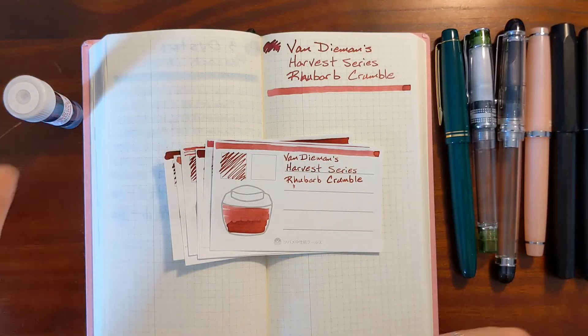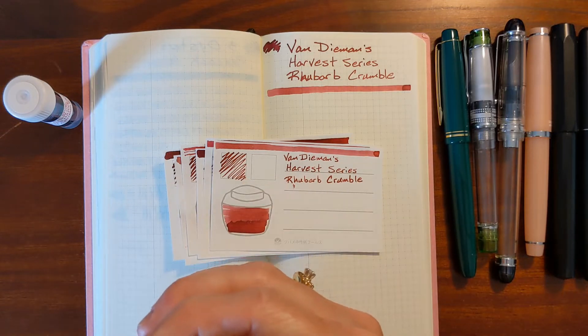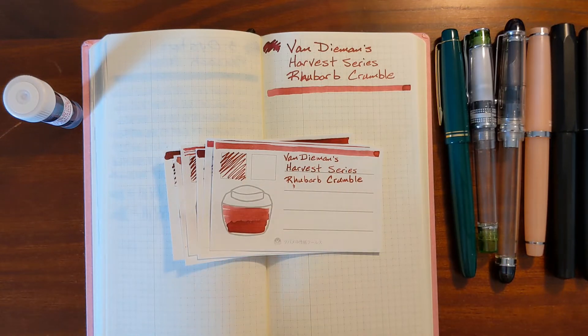I'll be doing a writing sample on Tomoe River paper and I'll take a look at a writing sample that I did previously on 20 pound copy paper. Then I'll compare Rhubarb Crumble to similar inks from my collection and finally I'll take a look at the results of the water resistance test.